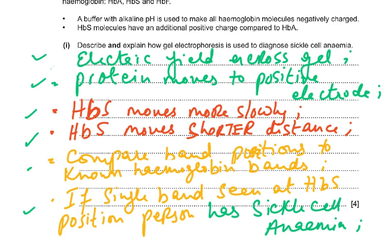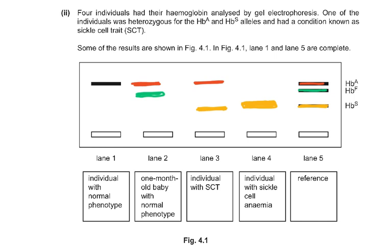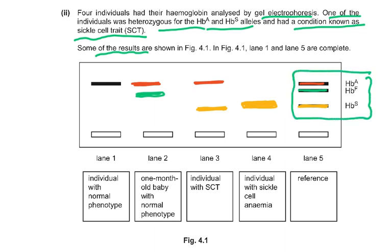For the last part, four individuals had their hemoglobin analyzed by gel electrophoresis. One was heterozygous HbA/HbS with sickle cell trait. A one-month-old baby with normal phenotype had HbA and HbF — shown in the gel. Lane three, individual with sickle cell trait, had HbA and HbS. Individual with sickle cell anemia had HbS/HbS. The reference bands were provided. The different hemoglobin types are shaded in different colors to help identify them.